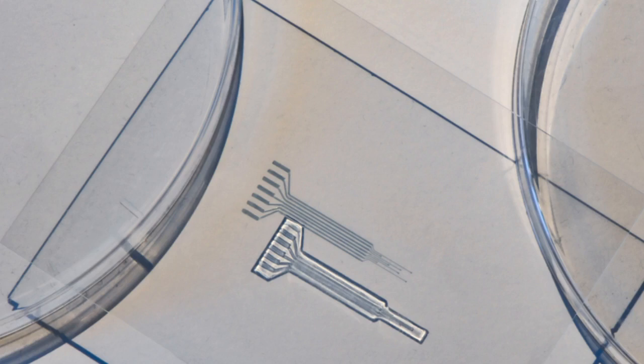The researchers then implanted the printed jello-like electrodes onto the heart, sciatic nerve and spinal cord of rats.